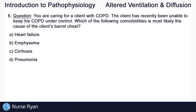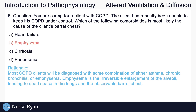Question number six. You are caring for a client with COPD. The client has recently been unable to keep his COPD under control. Which of the following comorbidities is most likely the cause of the client's barrel chest? The answer here is B: emphysema. Most COPD clients will be diagnosed with some combination of either asthma, chronic bronchitis, or emphysema. Emphysema is the irreversible enlargement of the alveoli, leading to dead space in the lungs and the observable barrel chest.